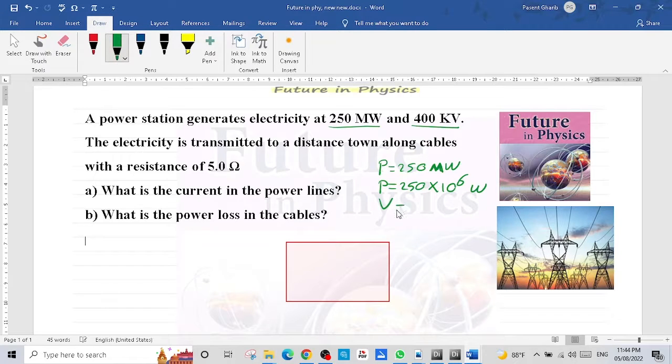400 kilovolt, this is the voltage, 400 kilovolt. From kilovolt to volt, multiply by 10 to the power 3.